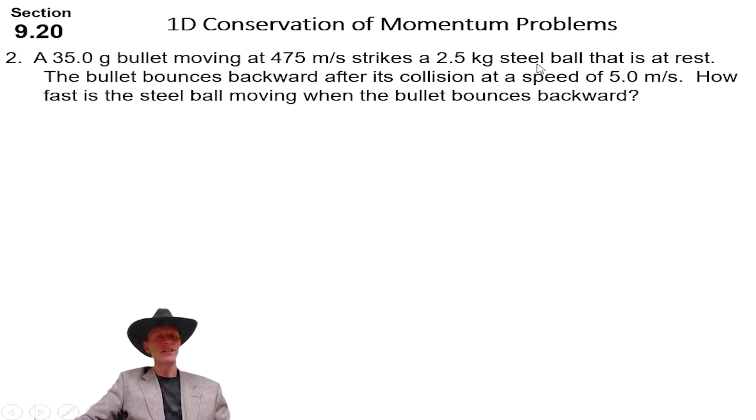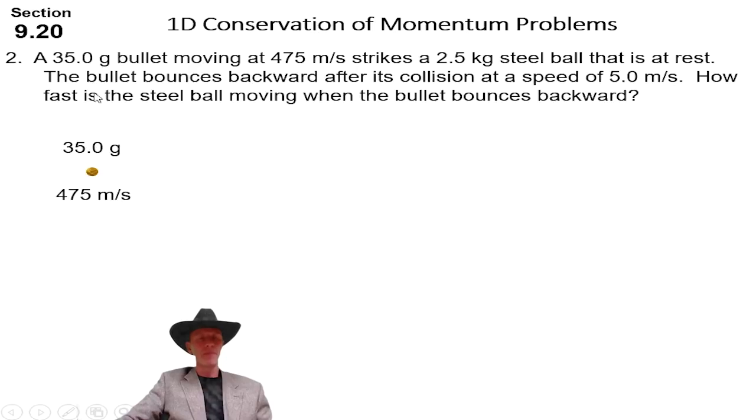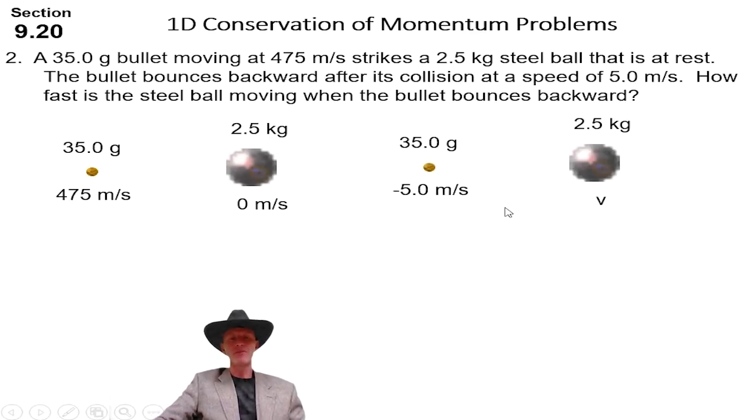This bullet strikes a steel ball that is at rest. The bullet bounces backwards. This may be closed. If the steel ball, wait, what does it say, at rest? It did say at rest. All right, so let's start. We've got a bullet with 35 and 475. It's a 2.5 at rest. The bullet bounces backwards after its collision. So how do we account for that? If we are assuming to the right is positive, backwards has to be negative. So the bullet bounces backwards at negative 5. And how fast is the steel ball going?